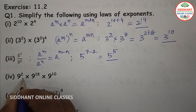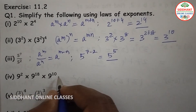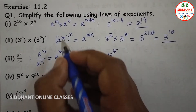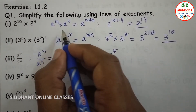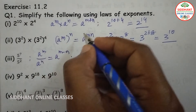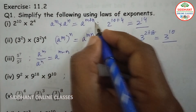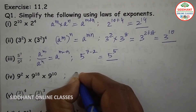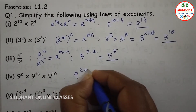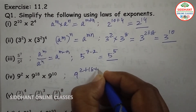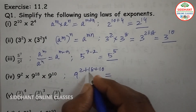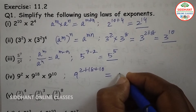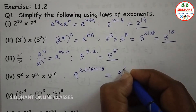Fourth one: 9 to the power of 2 into 9 to the power of 18 into 9 to the power of 10. We know a to the power of m into a to the power of n equals a to the power of m plus n. Base is same, so we add the powers: 9 to the power of 2 plus 18 plus 10, which equals 9 to the power of 30.